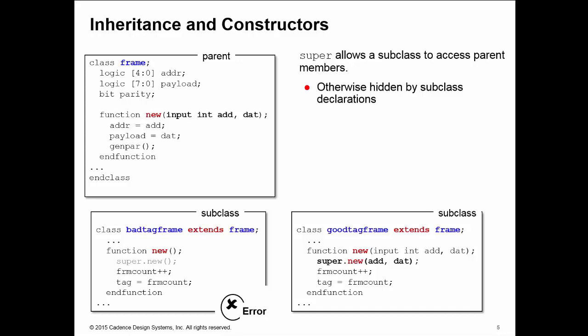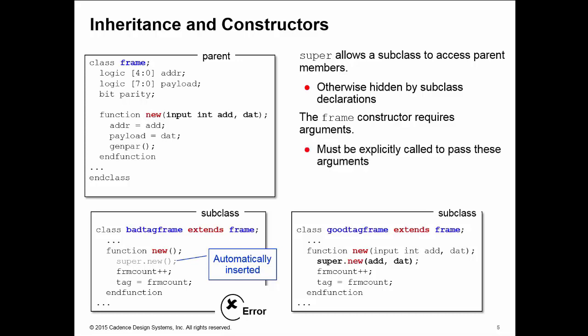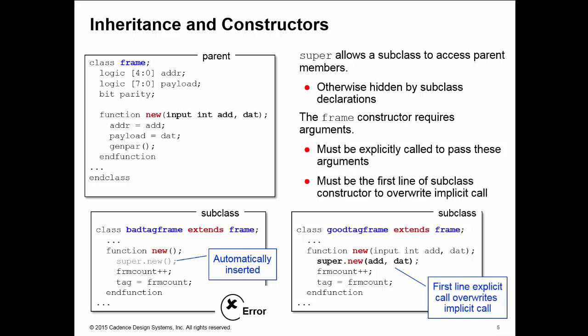My problem is the default super.new call which is automatically inserted as the first line of my subclass constructor doesn't pass those arguments for add and dat. However, if I explicitly call the constructor of the frame class by calling super.new, I can pass those arguments up, and if I make it the first line of the subclass constructor, this overwrites the implicit call and everything works fine.